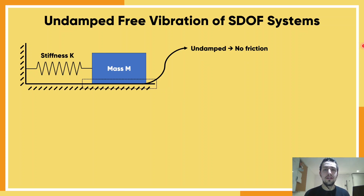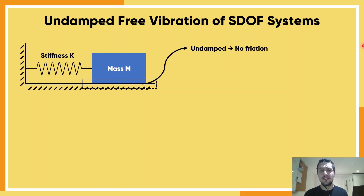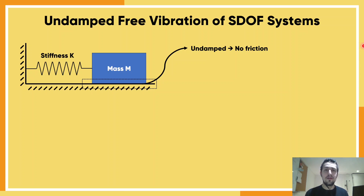By the word undamped, we just mean that we're not considering any loss of energy in our motion. So in this case we're not considering friction or air resistance or anything that could slow down our mass. So the mass will go and vibrate forever.